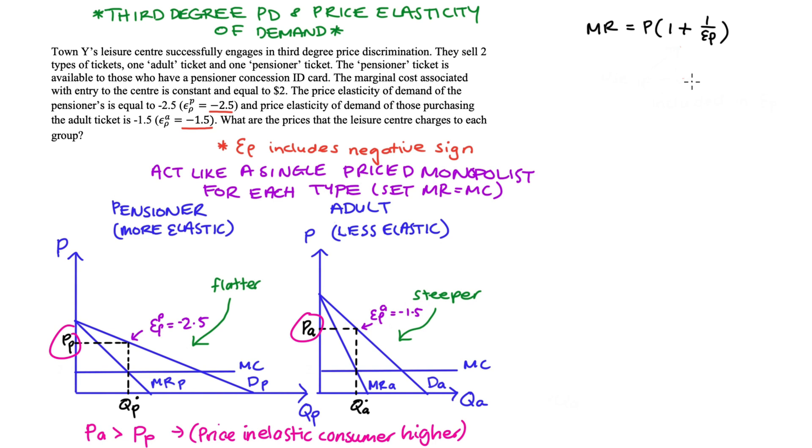All right, we're going to join this condition up with the other profit maximizing condition that I mentioned before. The firm will just set the price such that marginal revenue is equal to marginal cost. And we should just lastly also note from our question that the marginal cost is equal to two for both groups. So I'll just put that in the diagram. All right, let's think about our pensioners first.